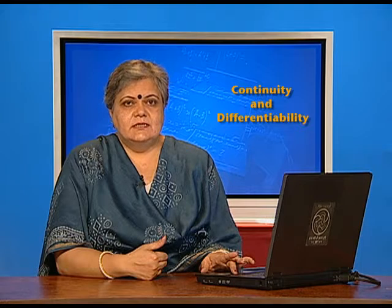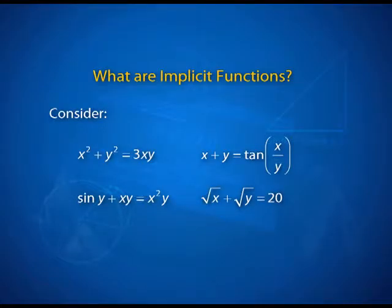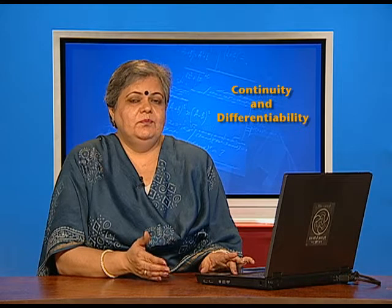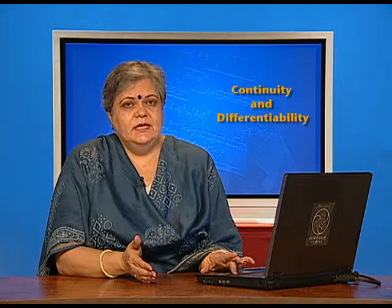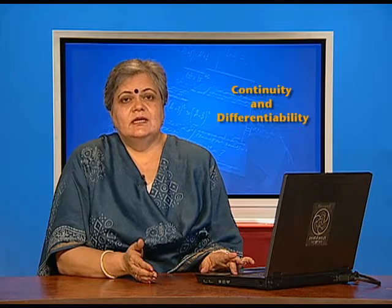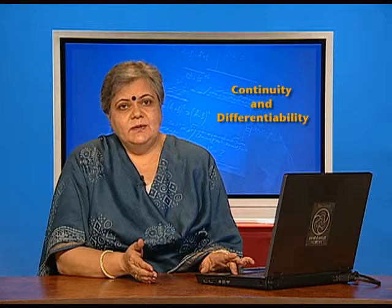What happens in these cases? Can you express y as a function clearly written in terms of x? Perhaps as you look at each one of them you will be able to say no. Such functions where there is a dependence of y on x, but y cannot be expressed explicitly in terms of x — we say that y is an implicit function of x. And today we are here to discuss the differentiation of implicit functions.